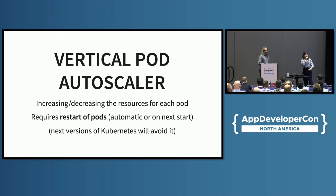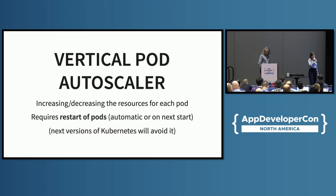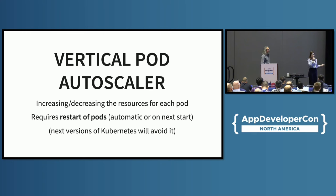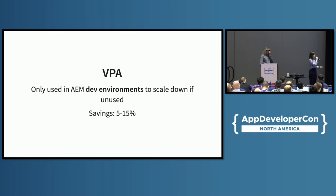We also use the vertical pod autoscaler, which decreases and increases resources for each pod — making it bigger or smaller. Currently in our Kubernetes version it requires a pod restart, though future Kubernetes versions will avoid that, making it more interesting for us. We only use it in dev environments to scale down unused ones, which is why our savings are modest — around 5–15%.